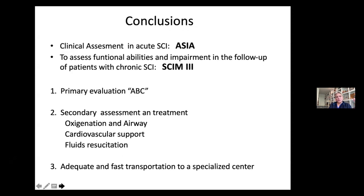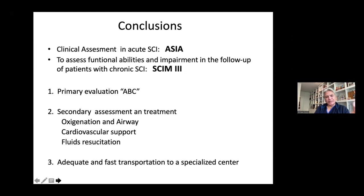In conclusion, we need to perform initial clinical assessment in acute spinal cord injury using the ASIA scale, and to assess functional abilities in the follow-up of chronic SCI patients with the SCIM-3 scale. We need to perform primary evaluation of the ABC, secondary assessment and treatment with oxygenation, airway preservation, cardiovascular support, fluid resuscitation, and adequate fast transportation to a specialized center.